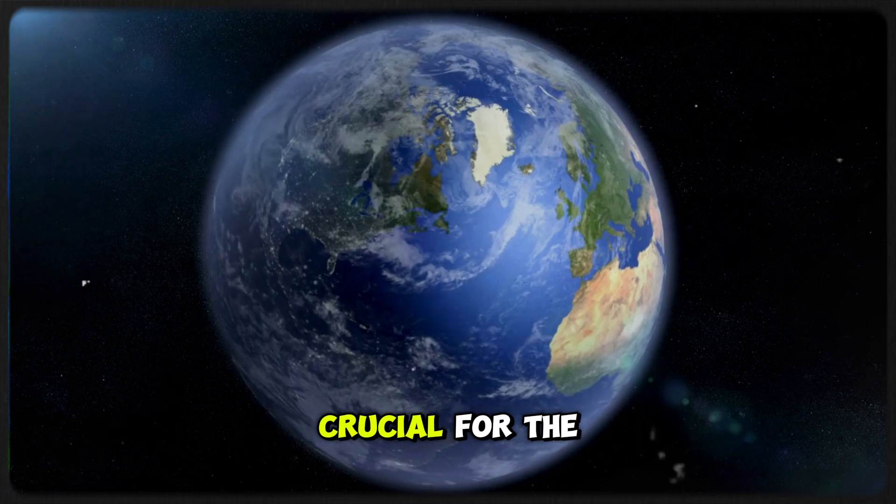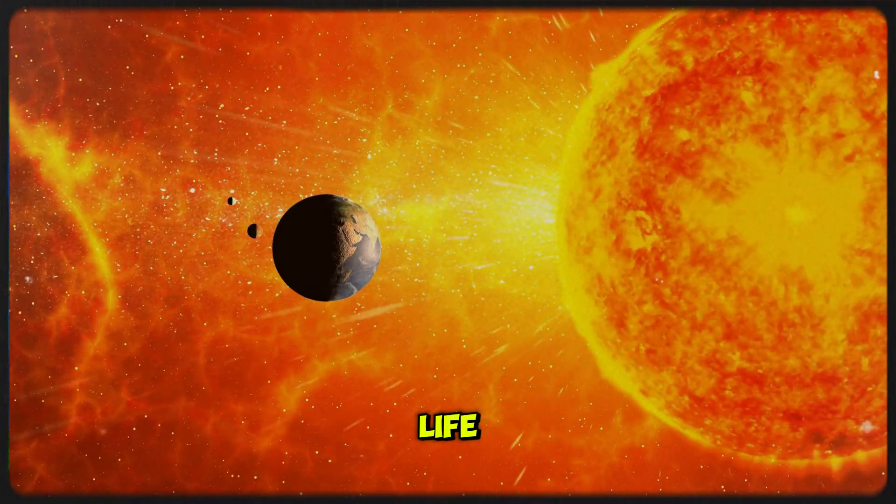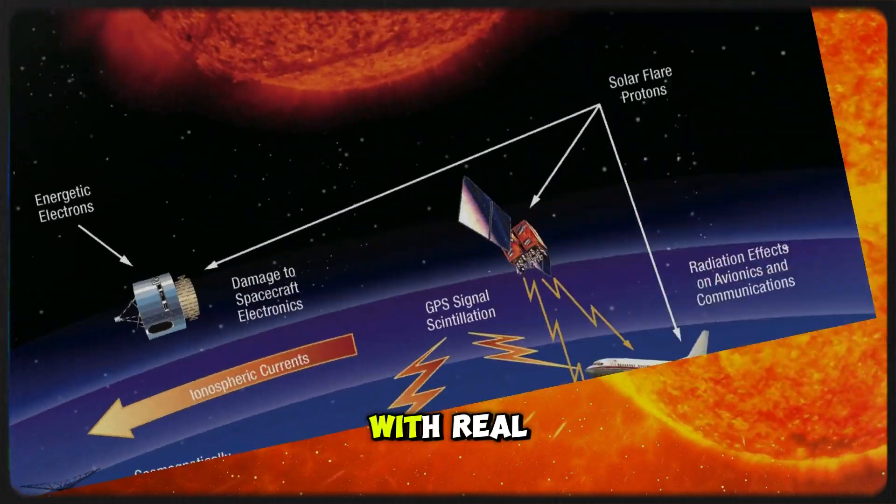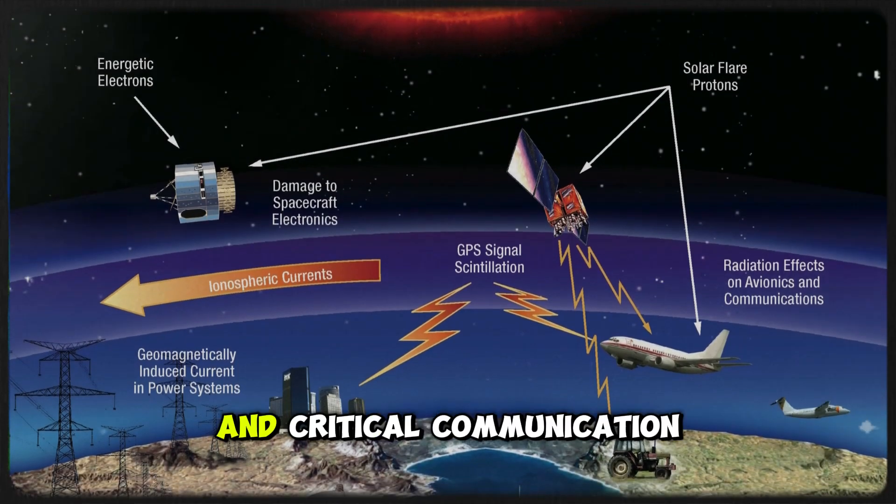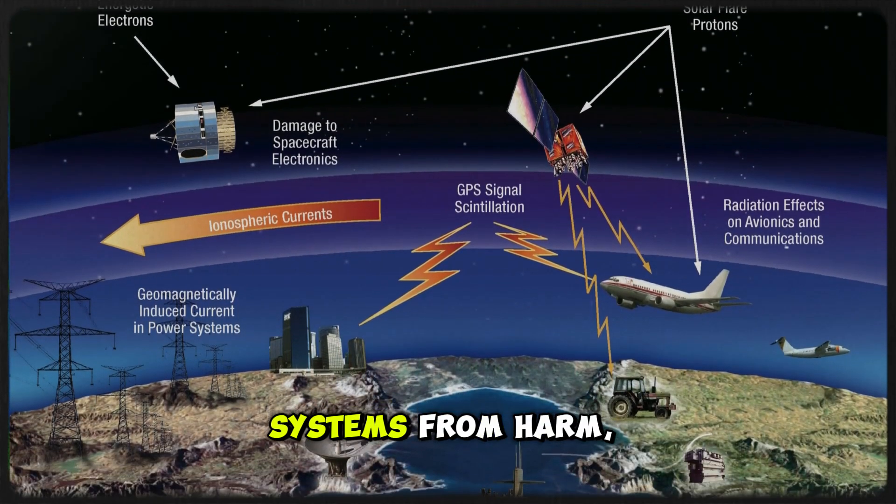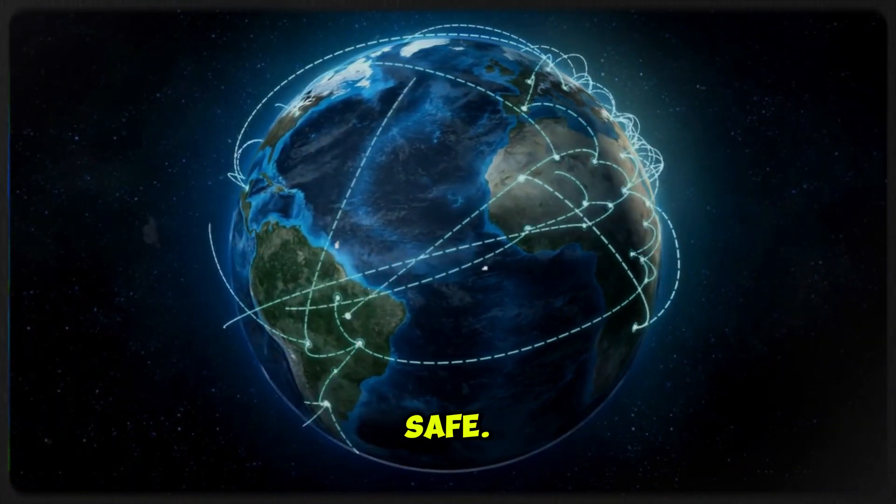Why is this crucial for the world? Because the sun doesn't just power life, it can also disrupt it. With real-time solar monitoring, we can shield satellites, power grids, and critical communication systems from harm, ensuring the world stays connected and safe.